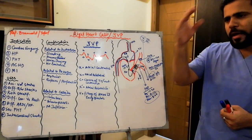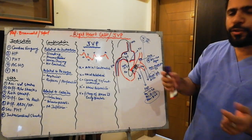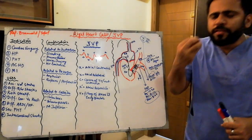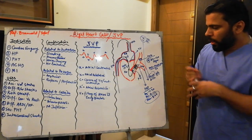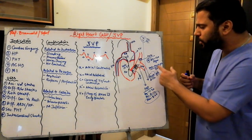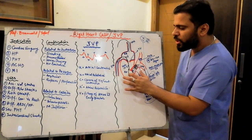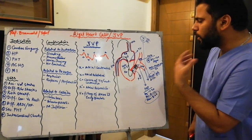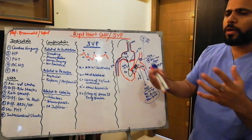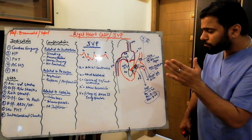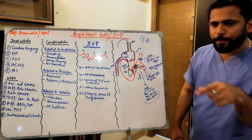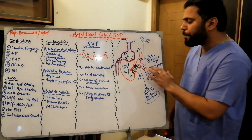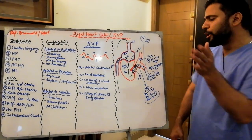PVR — Pulmonary Vascular Resistance — is the resistance exerted by the pulmonary vasculature. It is not directly measured but calculated by the equation: (mean pulmonary artery pressure minus PCWP) multiplied by 80, divided by cardiac output. Normal PVR is 20 to 120 dynes·sec·cm⁻⁵.